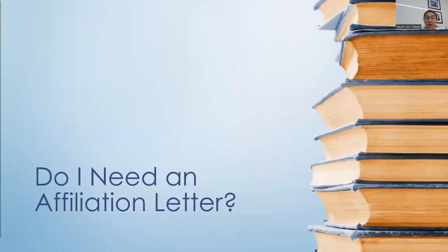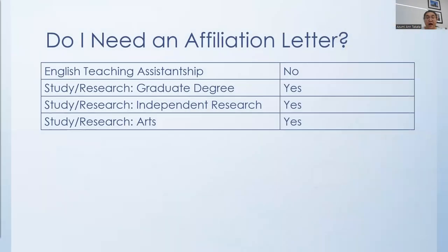Do I need an affiliation letter? The answer depends. If you're applying for the English Teaching Assistantship, no — they will find a placement for you and assign you to a school or group of schools. So if you're applying for an ETA award, you do not need an affiliation letter. If you're applying for one of the study research grants — regardless of whether you're doing a graduate degree, independent research, or the arts — you will need an affiliation letter at some point, although the exact requirements differ somewhat by award type.